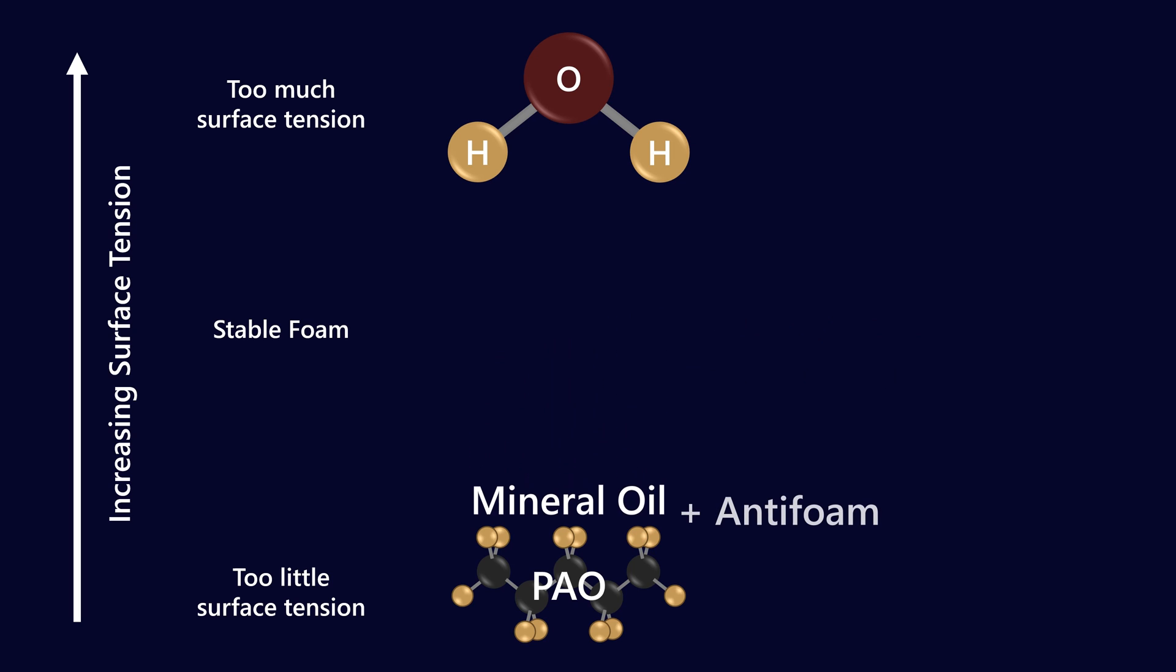Now, how do we decrease the amount of foam in mineral oil? Well, we add anti-foam particles. Now, anti-foam particles are generally silicon polymers or acrylate polymers. And what these are is very, very low surface tension substances that are attracted to the air-oil interface. So what they're going to want to do is reduce the surface tension so that foam bubbles are not stable.